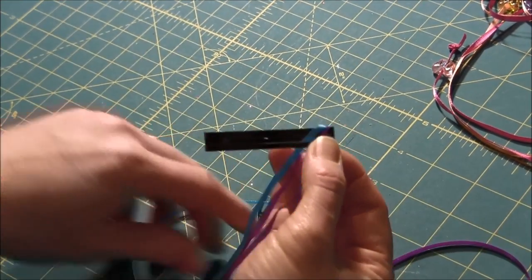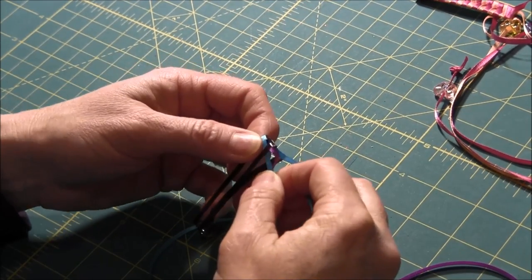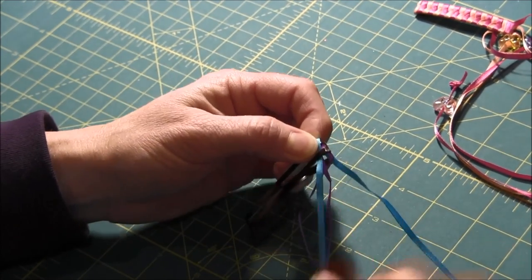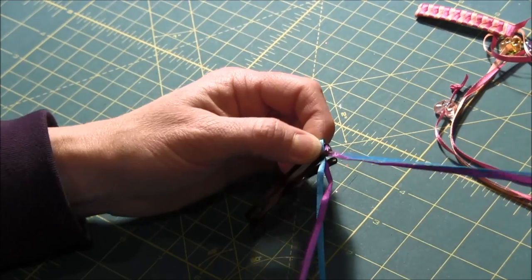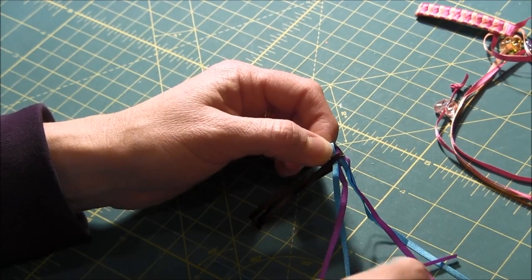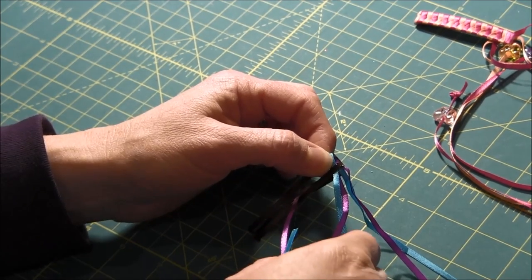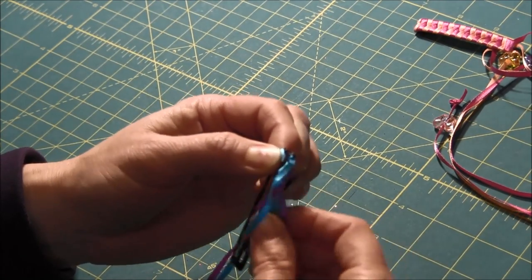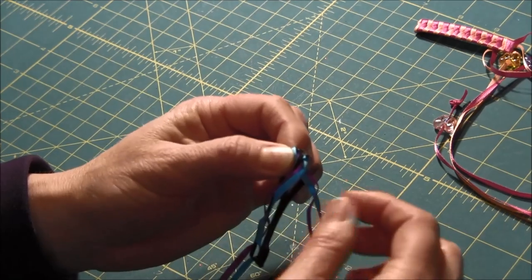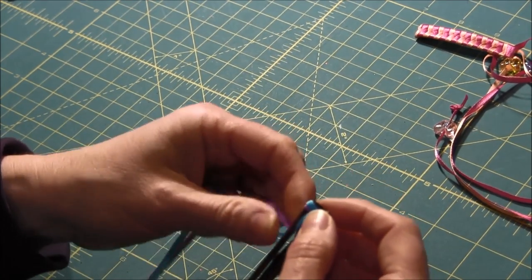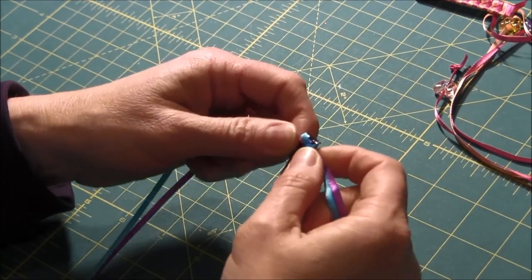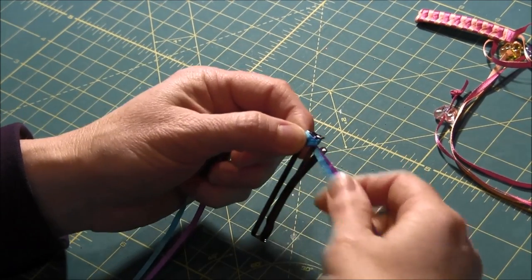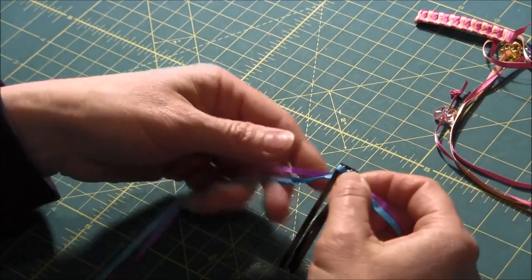You want to make sure it's not twisted because you don't want to end up with the wrong color on the top so that you can get the alternating color look. Now I'm holding this one in and I will take the other side and stick these through. So there's my first crossover.